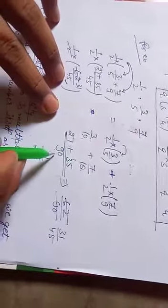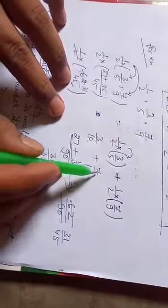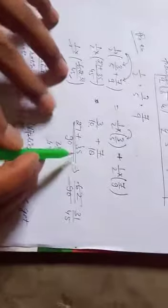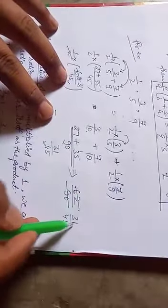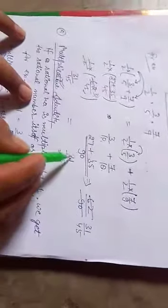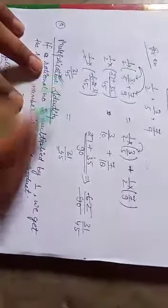18 divides 90 five times, multiply by 5, divide by 5, multiply by 7 to get 35. If we add 27 and 35, we get 62 upon 90, which simplifies to 31 upon 45. The result is the same from both methods.